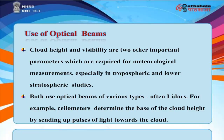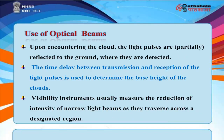Use of Optical Beams. Cloud height and visibility are two other important parameters required for meteorological measurements, especially in tropospheric and lower stratospheric studies. Both use optical beams of various types, often lidars. For example, ceilometers determine the base of cloud height by sending up pulses of light; upon encountering the cloud, the light pulses are partially reflected to the ground, and the time delay between transmission and reception is used to determine the cloud base height. Visibility instruments measure the reduction of intensity of narrow light beams as they traverse across a designated region.